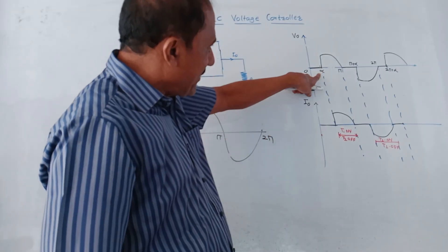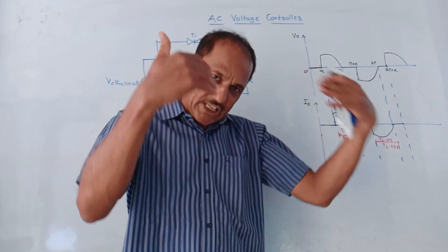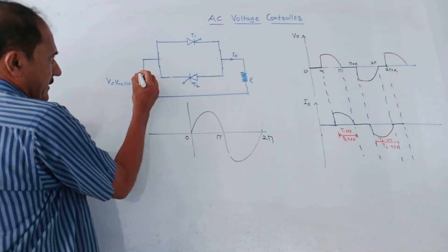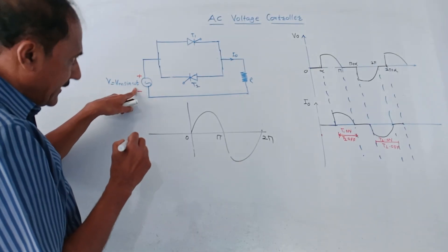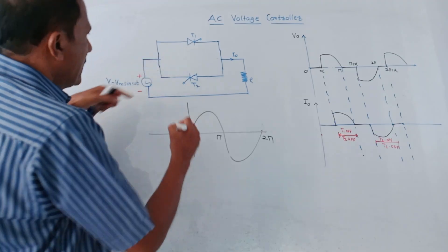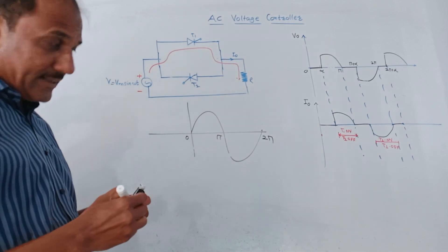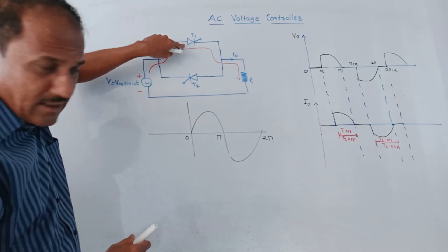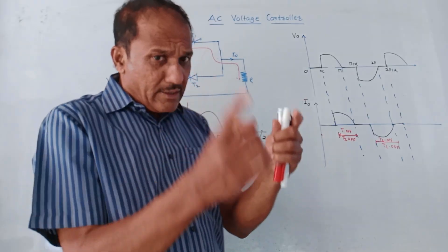We consider firing angle equal to alpha — after this firing angle alpha, a particular SCR will be triggered. During the positive half cycle, this terminal will be positive and the other will be negative. During the positive half cycle, T2 is off and T1 is turned on, so current flows through the resistance R.